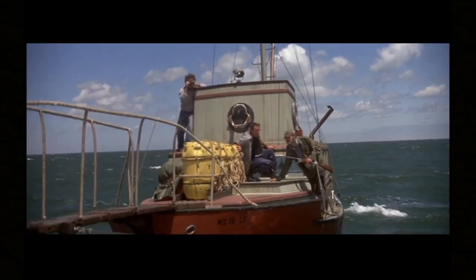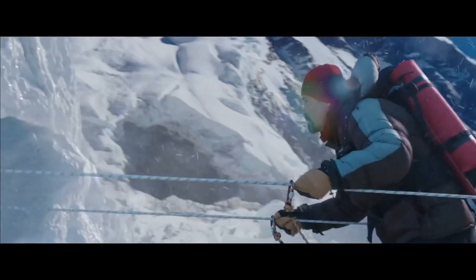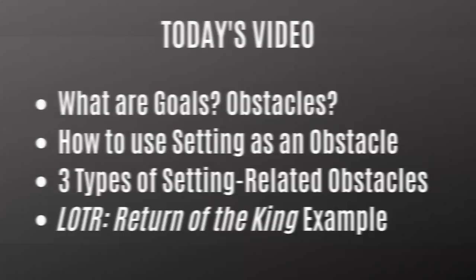One of my subscribers requested a video on the subject of setting versus character, or more specifically, how to use setting as an obstacle that gets in the way of a character's goals. I'm going to go over some basic things like what a goal is, what an obstacle is, how to use setting as an obstacle, and then get into the three types of setting-related obstacles.